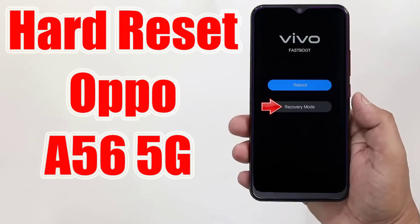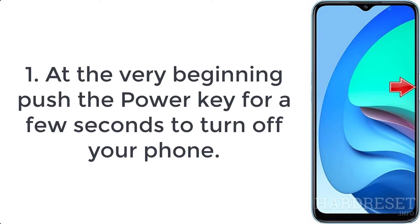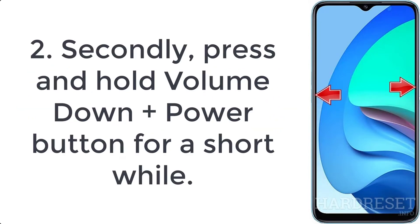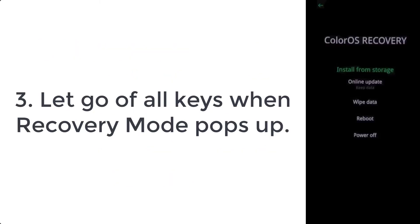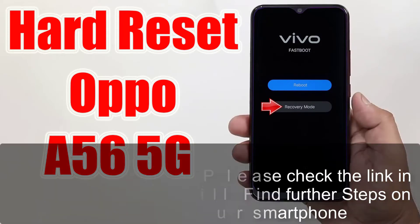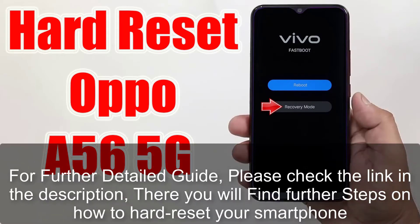How to hard reset Oppo A56 5G. Step 1: Push the power key for a few seconds to turn off your phone. Step 2: Press and hold the volume down plus power button for a short while. Step 3: Let go of all keys when recovery mode pops up.